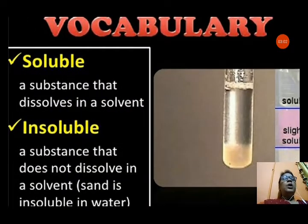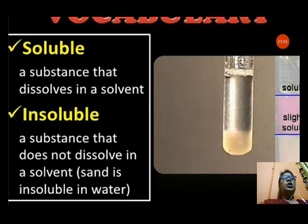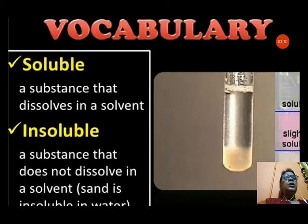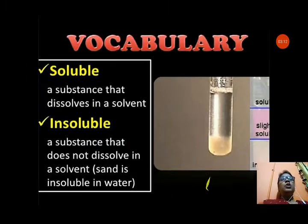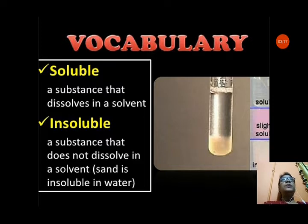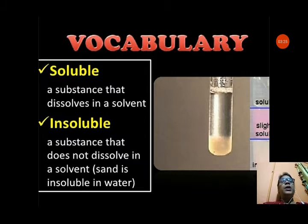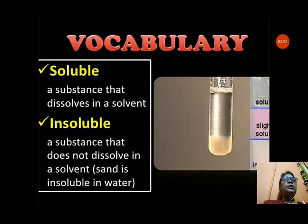Now, two more important terms: soluble and insoluble. A soluble substance is one that dissolves in a solvent — it mixes and disappears into the solvent. An insoluble substance is one that does not dissolve in a solvent. For example, sand is insoluble in water — it will settle at the bottom of the container.